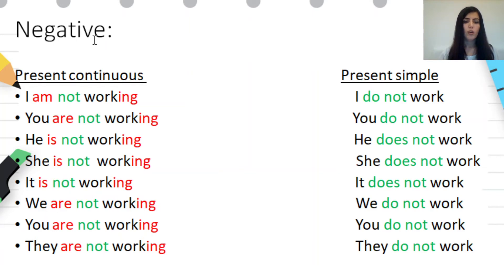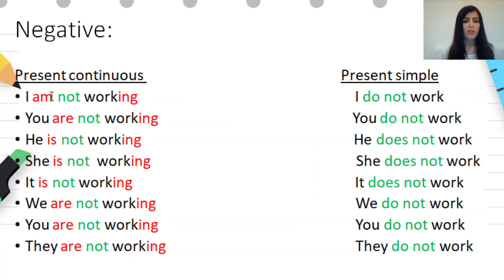Negative form — present continuous and present simple. Present continuous negative form: first we use the subject, then the verb be, then 'not,' and then the main verb with -ing. I am not working. You are not working. He is not working. She is not working. It is not working. We are not working. You are not working. They are not working.